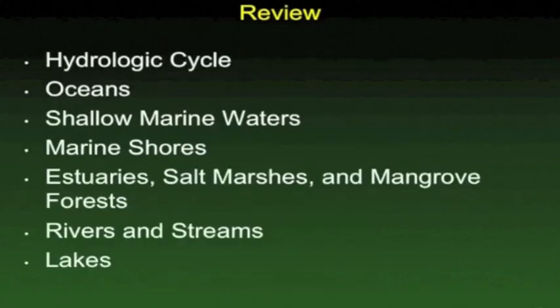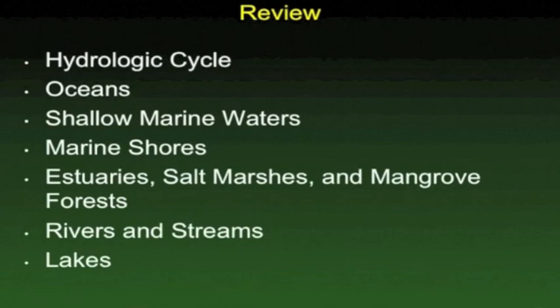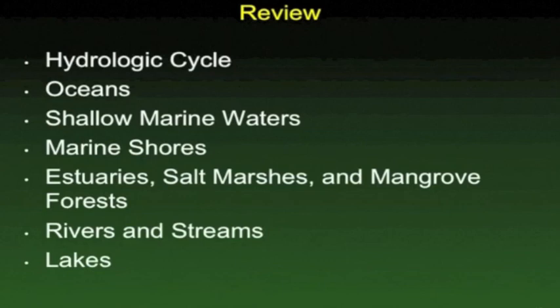For this chapter, you should have a basic understanding of the hydrologic cycle and the structure and chemical nature of oceans, as well as the current major circulation patterns in the oceans. In the shallow marine waters, you should know basic components like coral reefs. In the marine shores, we talked about the intertidal zone, and also estuaries, salt marshes, and mangrove forests — you should understand the importance of those systems to near-shore marine waters. For rivers and streams, we learned about basic structure and chemical nature, and the same for lakes.